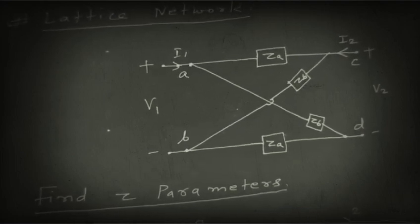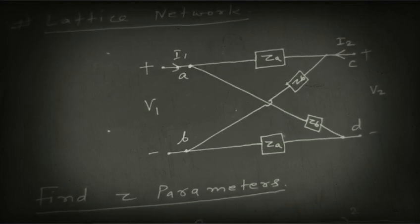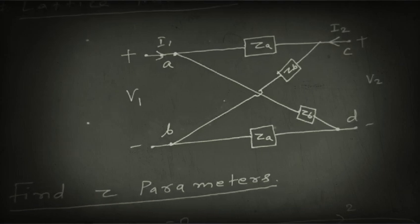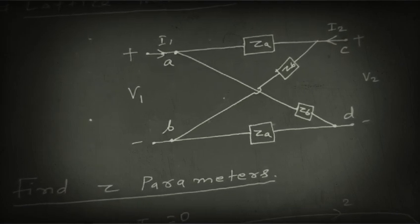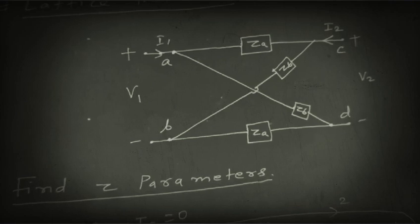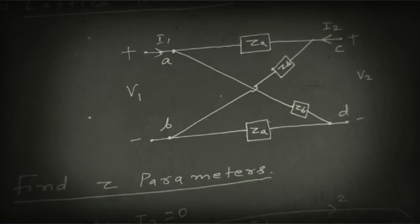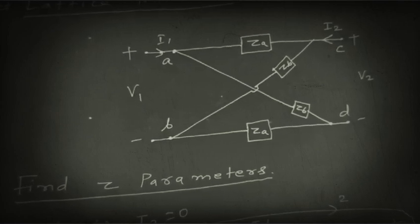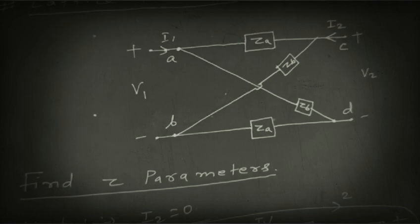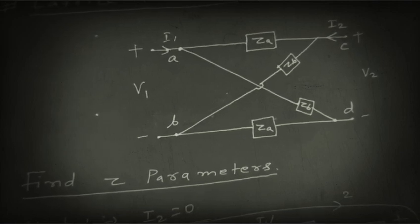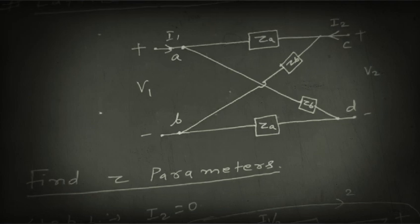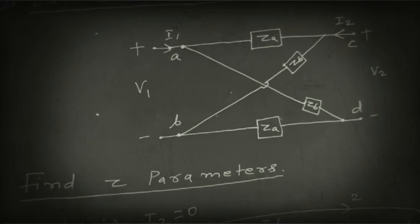In the case of a lattice network, we will have two series impedances and two shunt impedances connected diagonally. This is the figure of a symmetrical lattice network. Two series branches have impedance ZA, and two diagonal shunt branches have impedance ZB. The networks are connected between points A, B, C, and D. Two series branches are connected between A-C and B-D, while ZB is connected diagonally between B-C and between A-D.